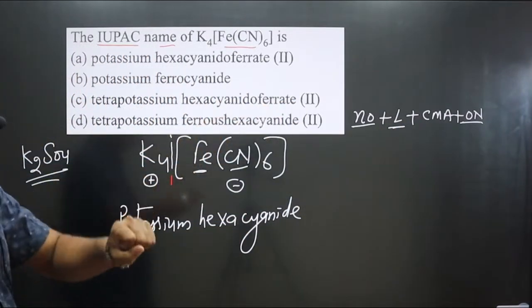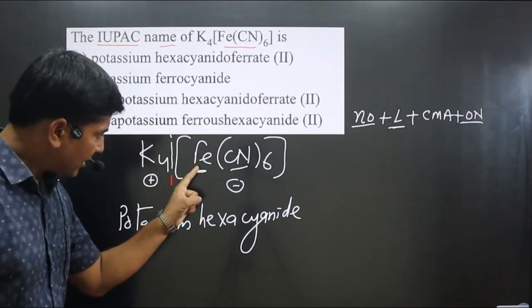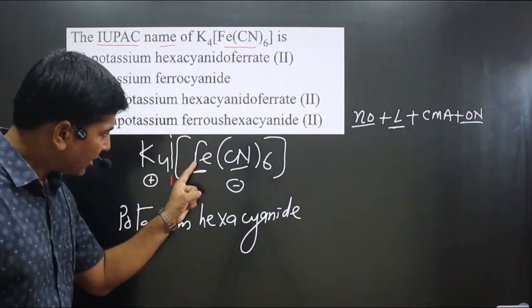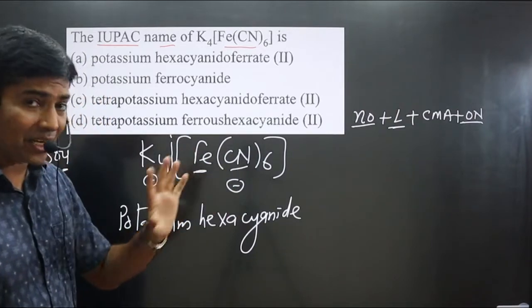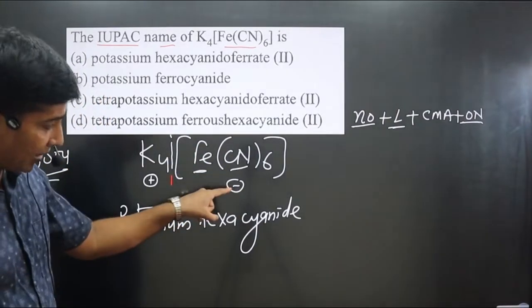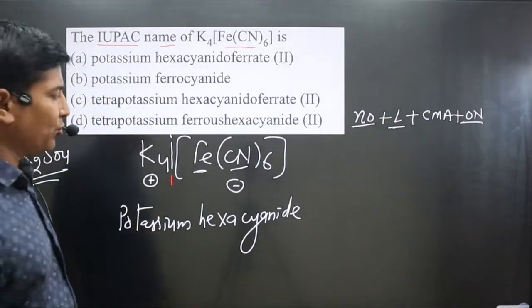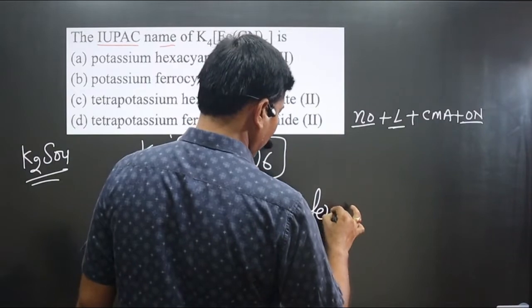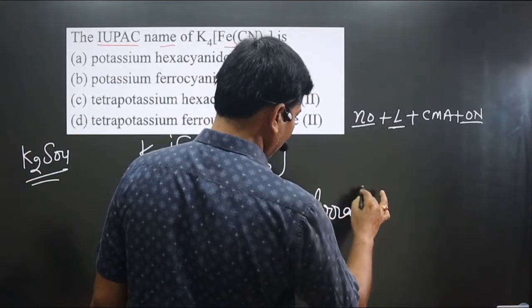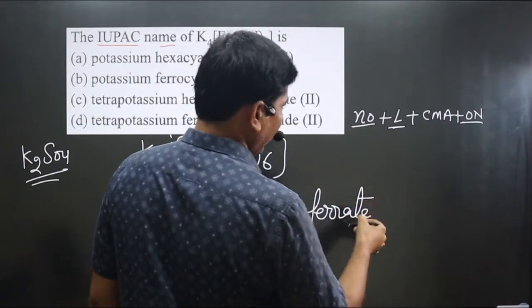The central metal atom is present in the anionic part, so we use the special name 'ferrate'. Then we need to calculate and write its oxidation number.